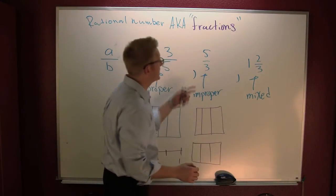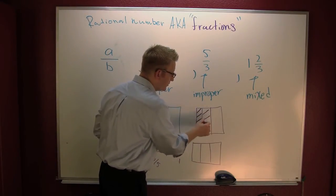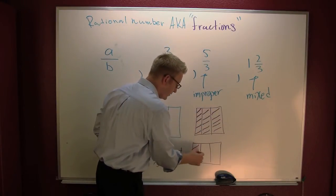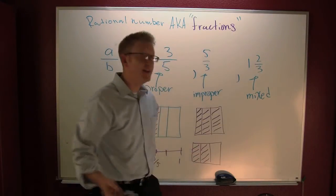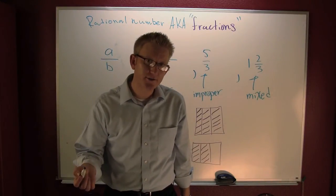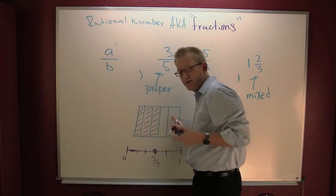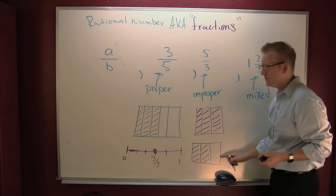Why? Because this has 1, 2, 3, 4, 5. That has 5 thirds. That's why it's improper. It's not contained in just 1 box or 1 unit. It spills over into 2 units.